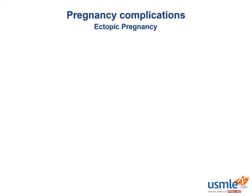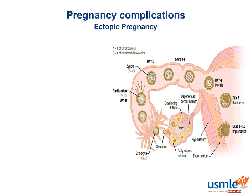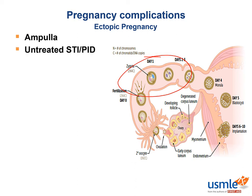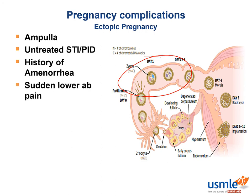A very common problem that often shows up on Step 1 and in real life is ectopic pregnancies. These are pregnancies that implant outside the uterus — the word ectopic referring to something that isn't where it's supposed to be. The ampulla of the fallopian tubes is by far the most common location, and it often results from an untreated STI or pelvic inflammatory disease causing scarring of the tubes. More rarely, ectopic pregnancies can occur in the ovary, cervix, or inside the abdominal cavity. Be on the lookout for a female patient who has not had her period for 7 or 8 weeks and is experiencing sudden lower abdominal pain — symptoms that can mimic appendicitis.